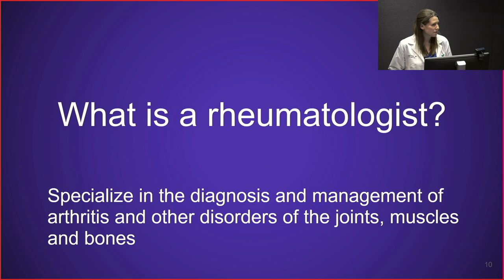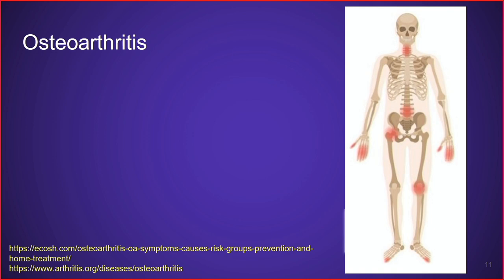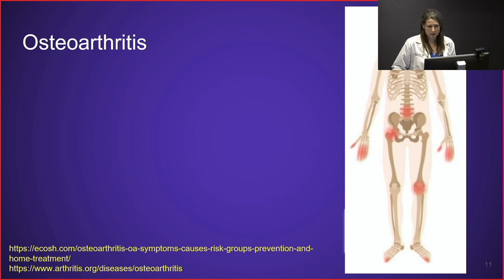First up is osteoarthritis, the most common form of arthritis. The areas highlighted in red on the skeleton show the most common places where osteoarthritis develops: the hands, the spine including the neck and lower back, the hips, knees, and toes.